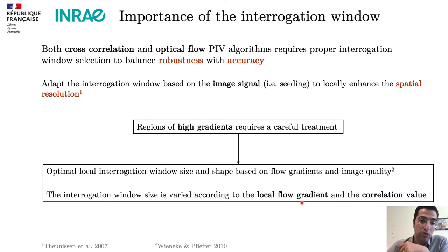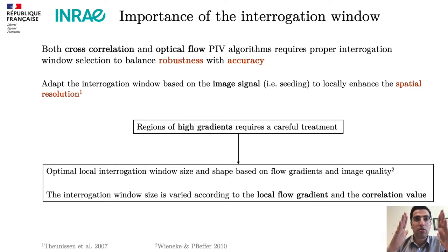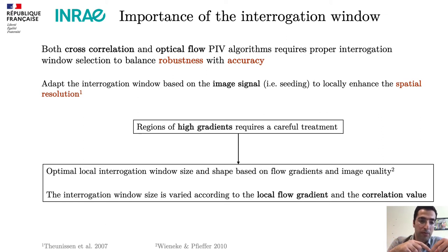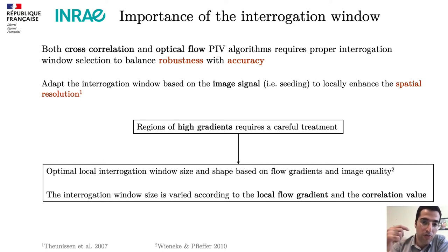That's exactly what we would like to work on. When you have high gradients, you can change the local interrogation window based on local flow gradients. But what if we know more information about the flow inside the interrogation window? We can use this information to shape the window instead of just looking at flow gradients. In that case, we can use Lagrangian coherent structures to determine where we have coherent motion with respect to your target pixel.